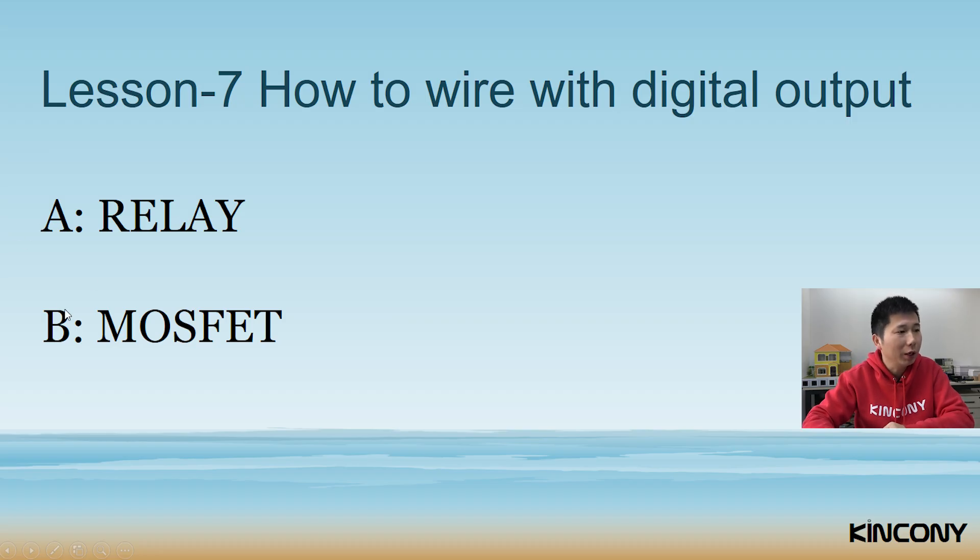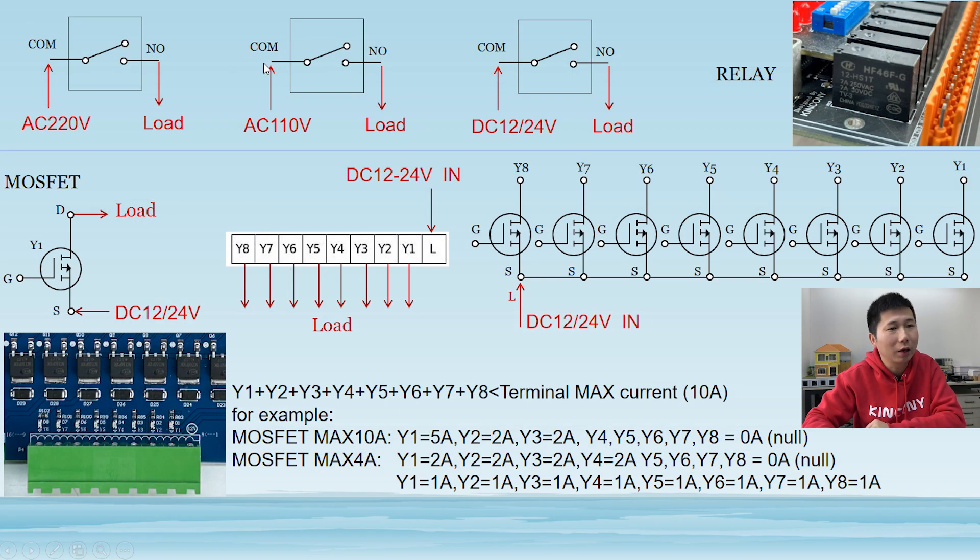Because you can see there are A and B, and usually we will be used by the relay and MOSFET. So the relay is mechanical version, so that is contained open and closed. And the MOSFET is contained by an electronic device. So in this video, I will show you what is different between these two cases.